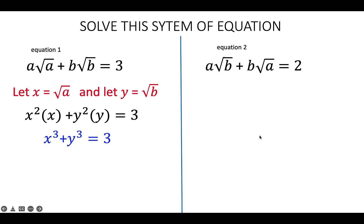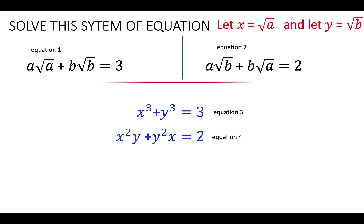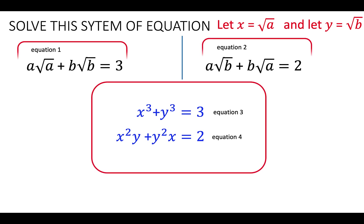Let's go to equation 2. Using the same substitution, equation 2 can now be written as X squared Y plus Y squared X equals 2. Let's call this equation 3, and the previous result equation 4. We'll work on equations 3 and 4, remembering our original equations and substitution.